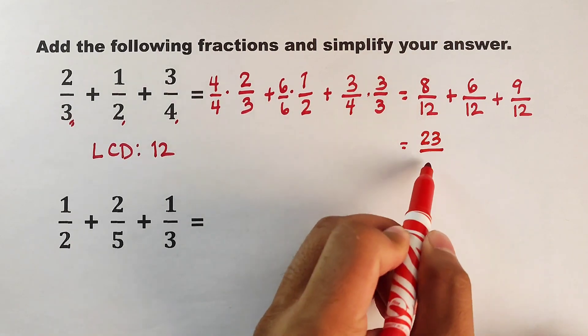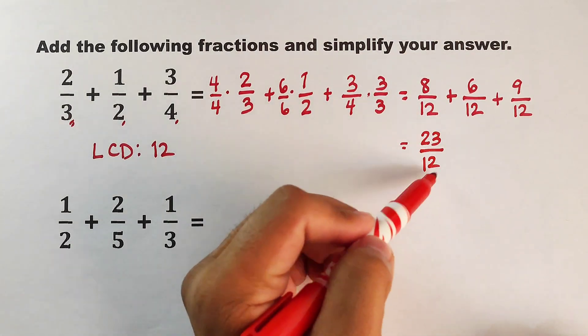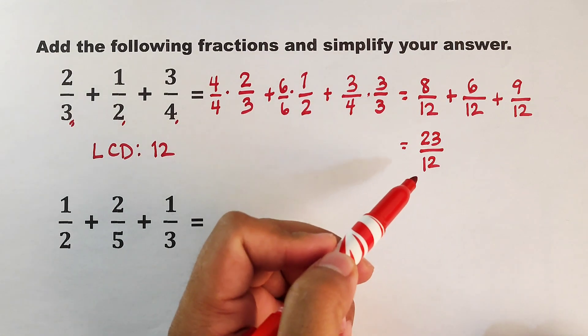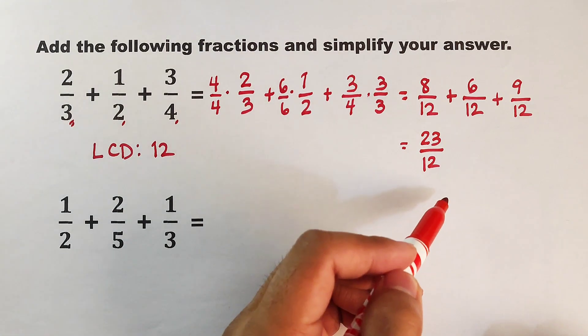Then copy your common denominator which is equal to 12. So we can declare this 23 over 12 as an answer. But there are teachers that are not accepting improper fractions.